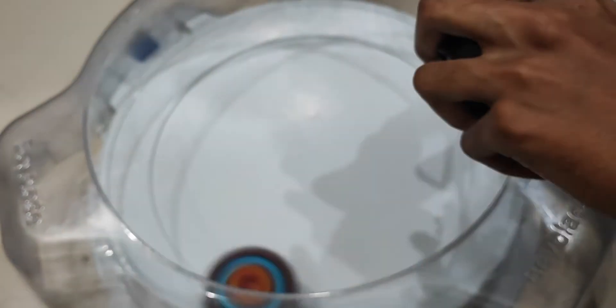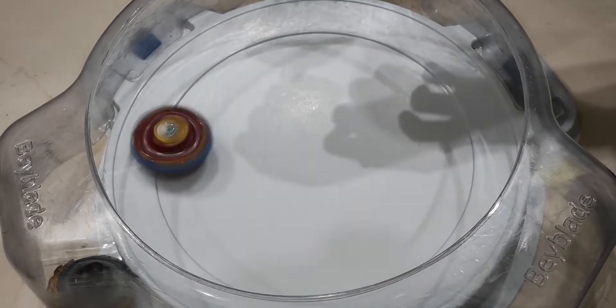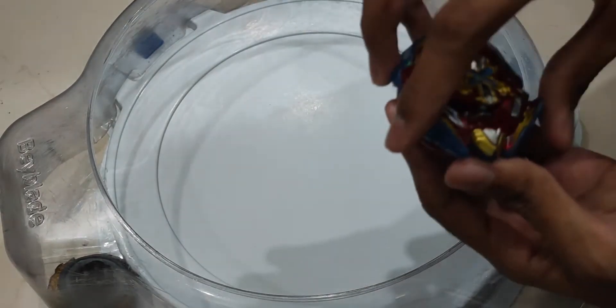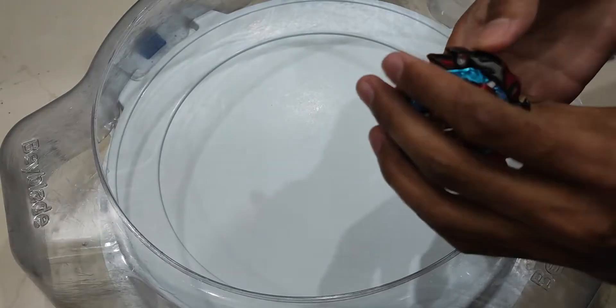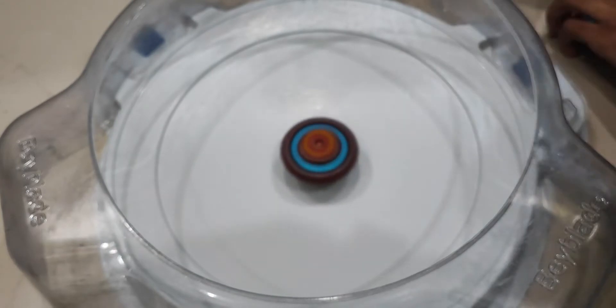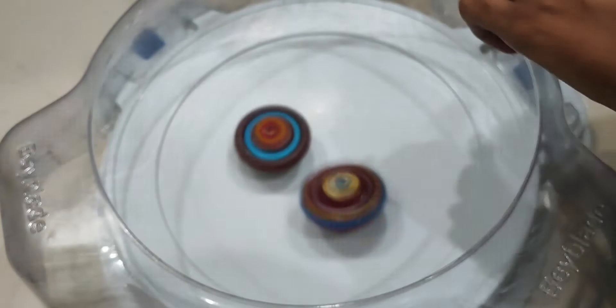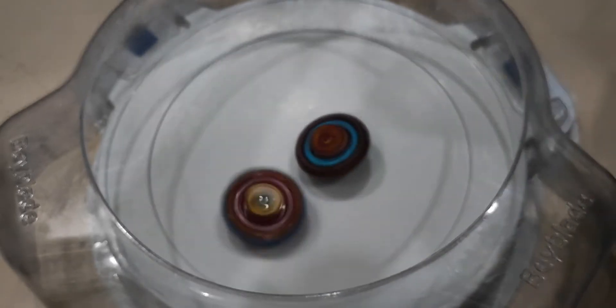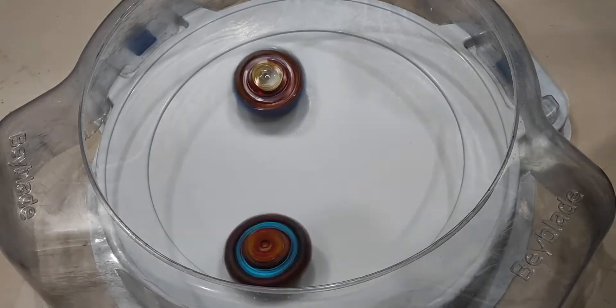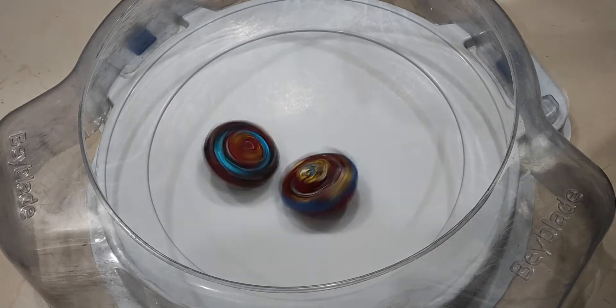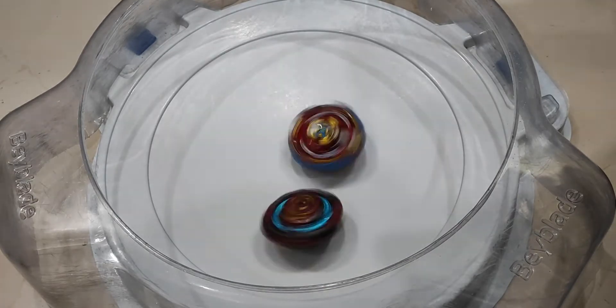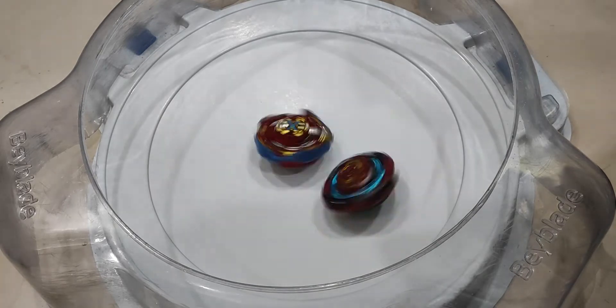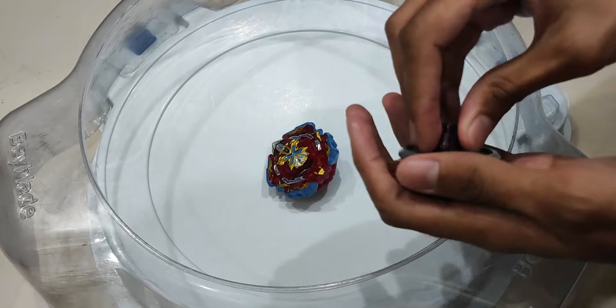I'm also using the string launcher by the way. 3, 2, 1, go. 1 win for Zyfied Excalibur, 1-0, 1 no clicks. Second round, 3, 2, 1, go. Those are like super large hits right there and this is still the Stark combo, so it's hitting like so hard right now. And the winner is Astral Spriggan, pretty defensive in right spin, only one click.